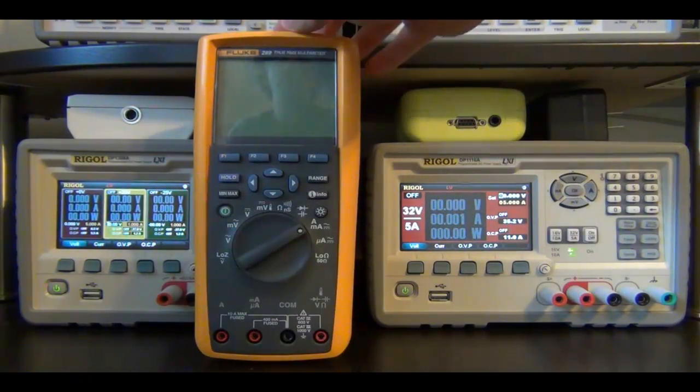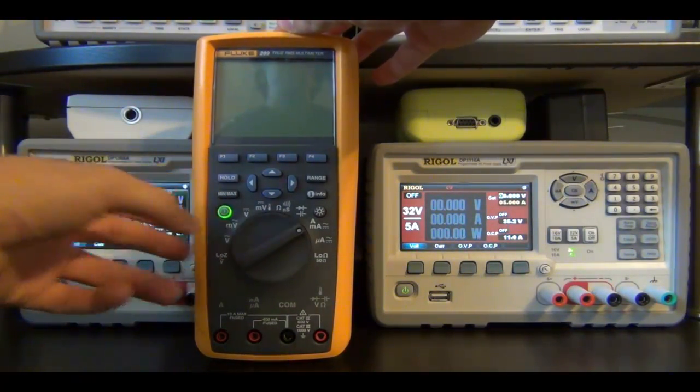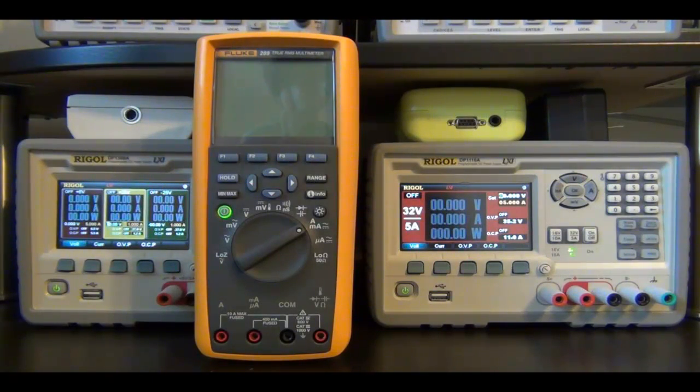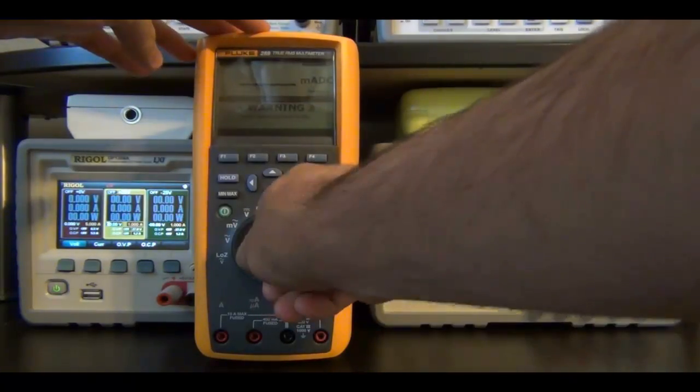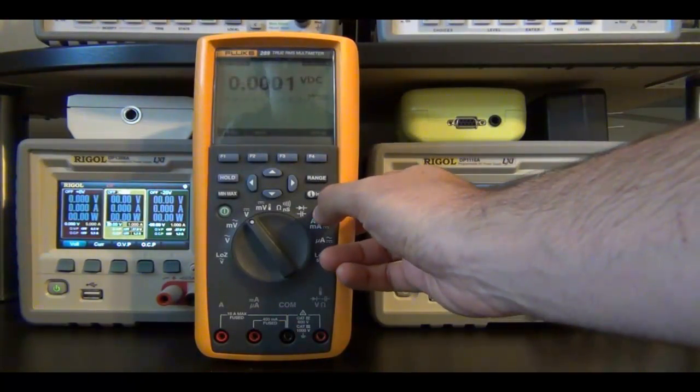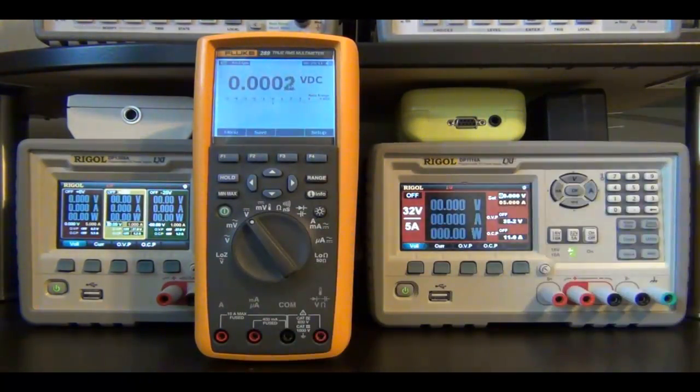I'm going to turn the Fluke one on. It's going to take a few seconds to boot up, and then I'm going to connect it to the power supply. I'm going to put it on voltage mode and turn the backlight on so you can see clearly what it says. Right now the output is not connected to anything, and it's just hovering around 100-200 microvolts.